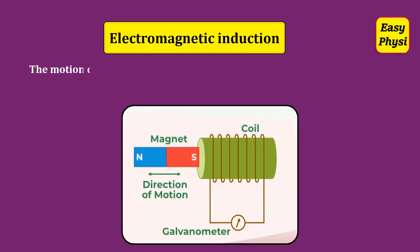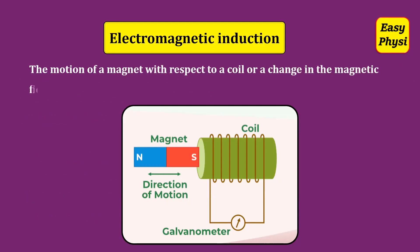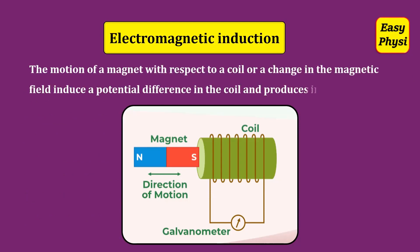Electromagnetic Induction: The motion of a magnet with respect to a coil, or a change in the magnetic field, induces a potential difference in the coil and produces an induced current.